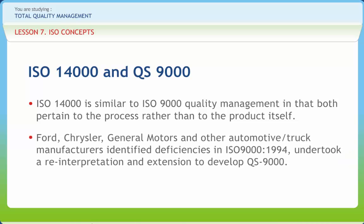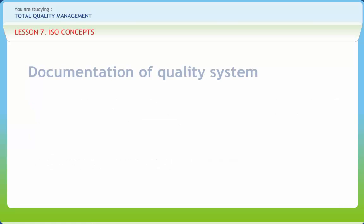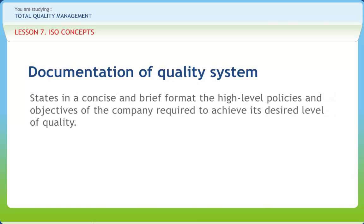Ford, Chrysler, General Motors, and other automotive or truck manufacturers identified deficiencies in ISO 9000:1994, undertook a reinterpretation and extension, and developed QS 9000. QS 9000 additionally addressed continuous improvement, manufacturing capability, and production part approval processes. The first step in setting up a quality management system within a company is to generate a quality manual. It is a document that states in concise and brief format the high-level policies and objectives of the company required to achieve its desired level of quality.